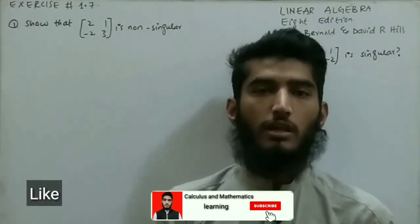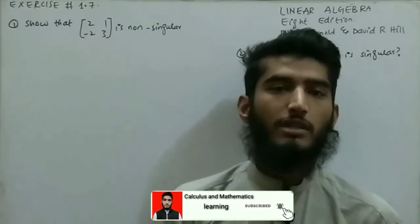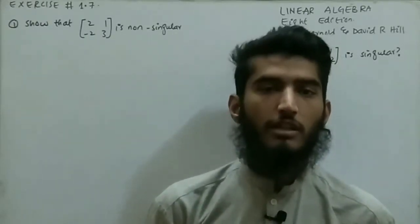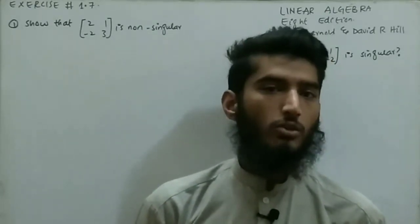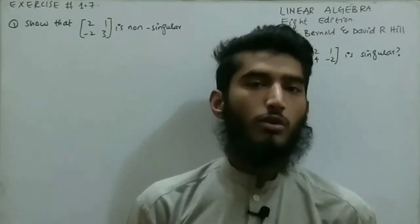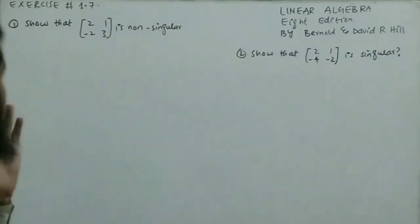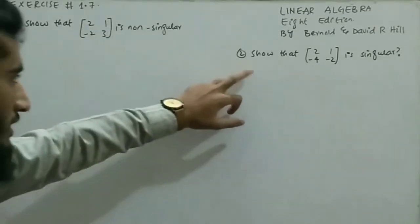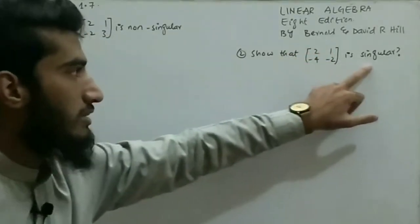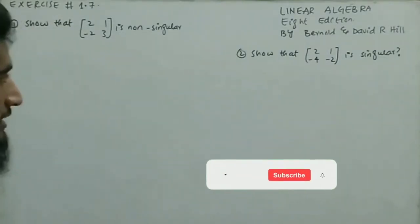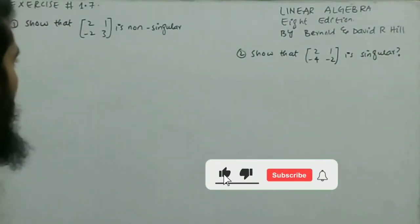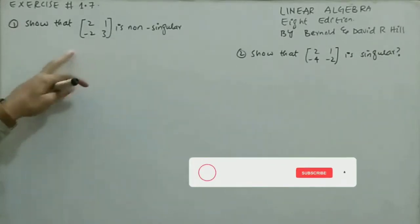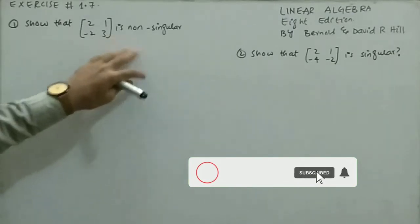Bismillahirrahmanirrahim. Welcome to my YouTube channel, Calculus and Mathematics Learning. In this video I will solve some questions related with Exercise 1.7 related with linear algebra written by Barnard Coleman and David R. Hill, 8th edition. This exercise is related with the reduced row echelon form, which we will use to determine whether a matrix is non-singular or singular.